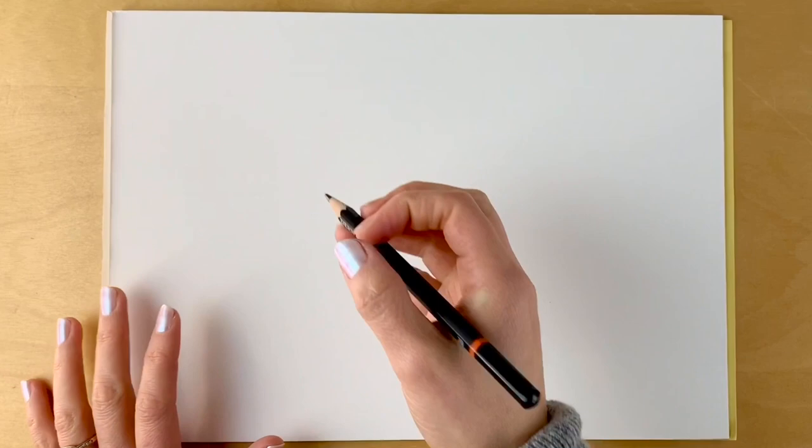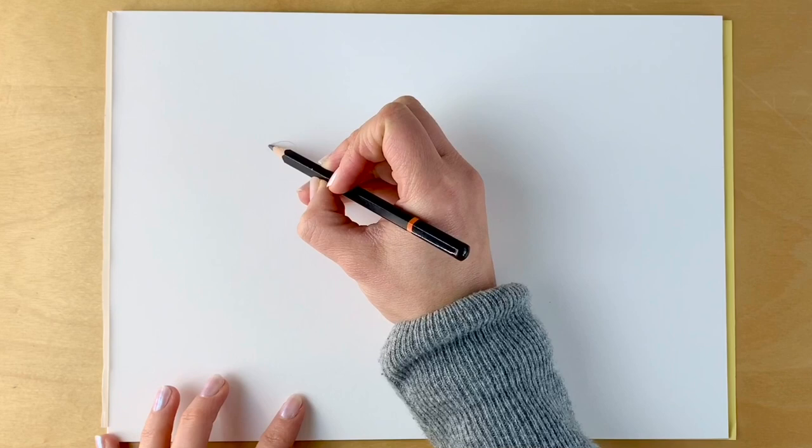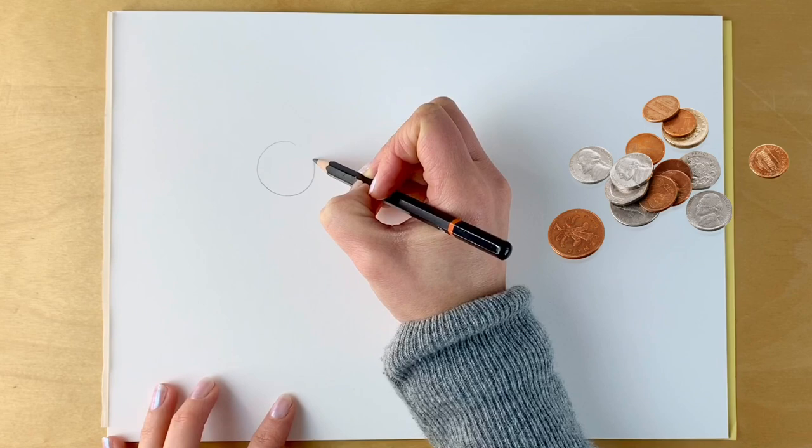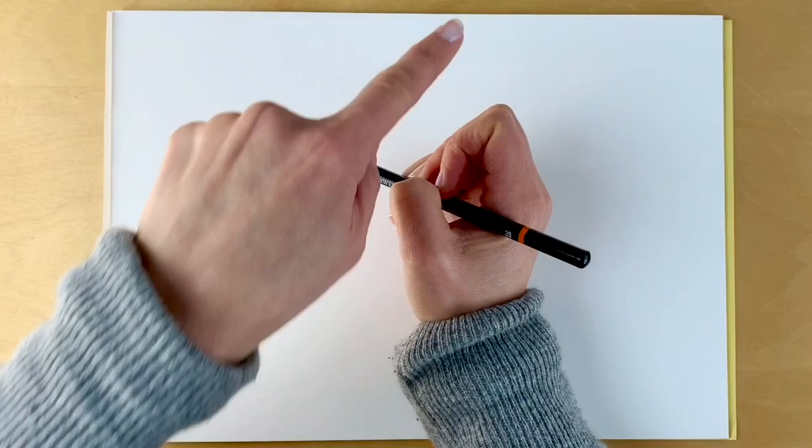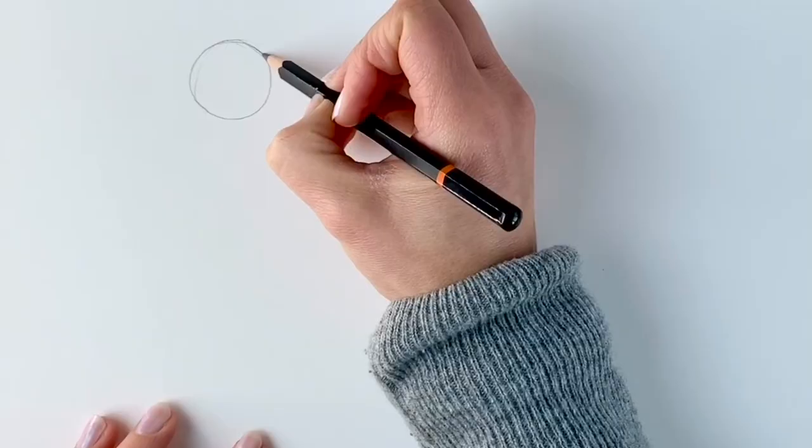We're going to start off our cougar by drawing a circle on the left-hand side of the page. It doesn't have to be perfect—this is just a rough guideline. You can draw around a coin if you've got one to hand, if not, I have a whole tutorial on how to draw a circle. There we go, there's a not very perfect circle.